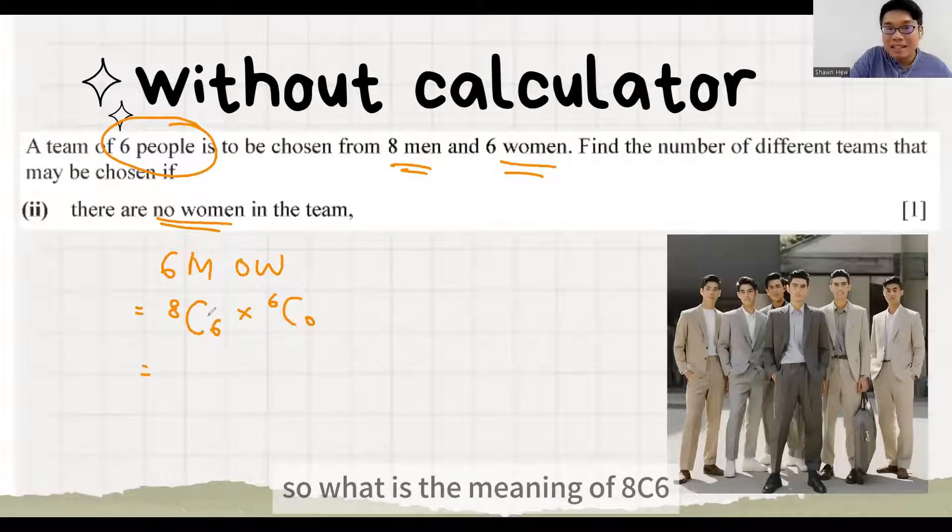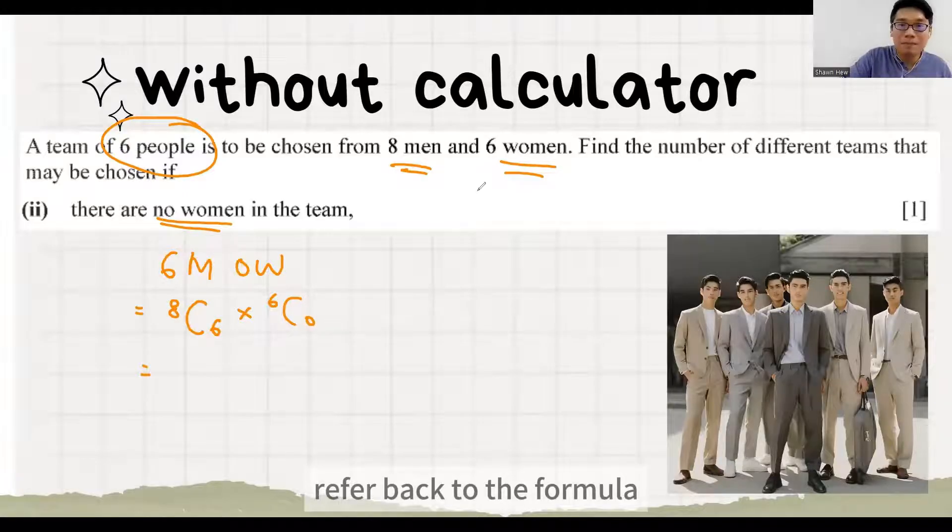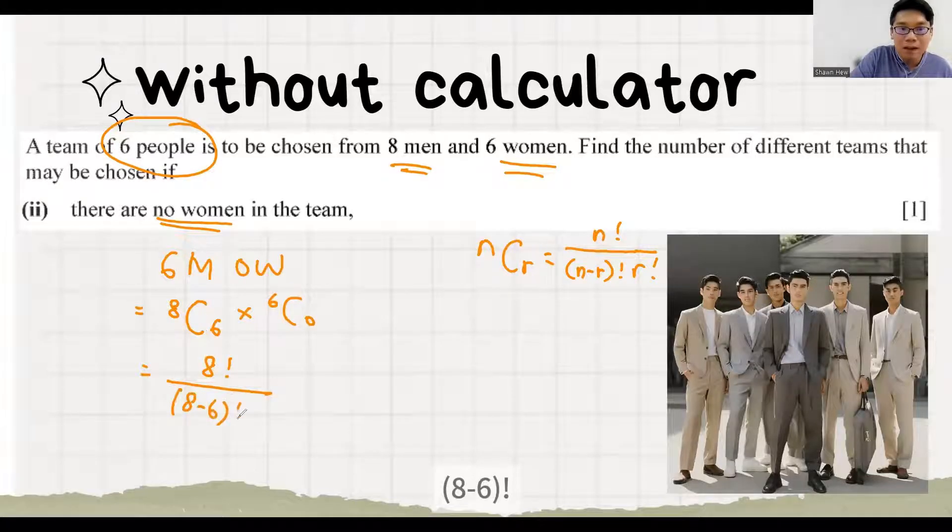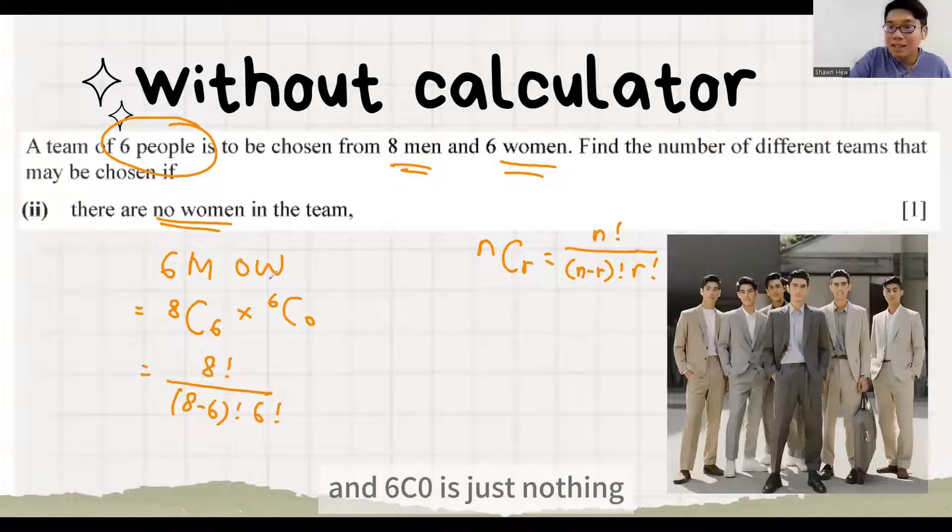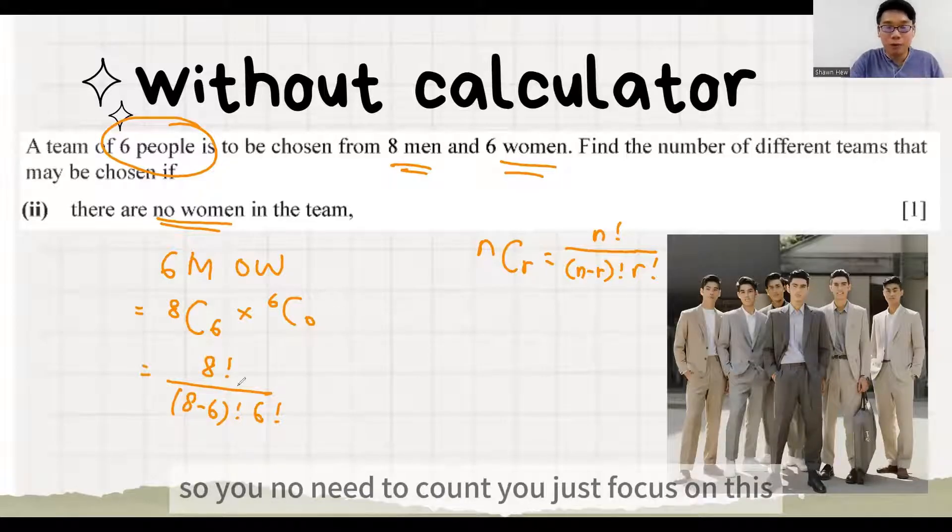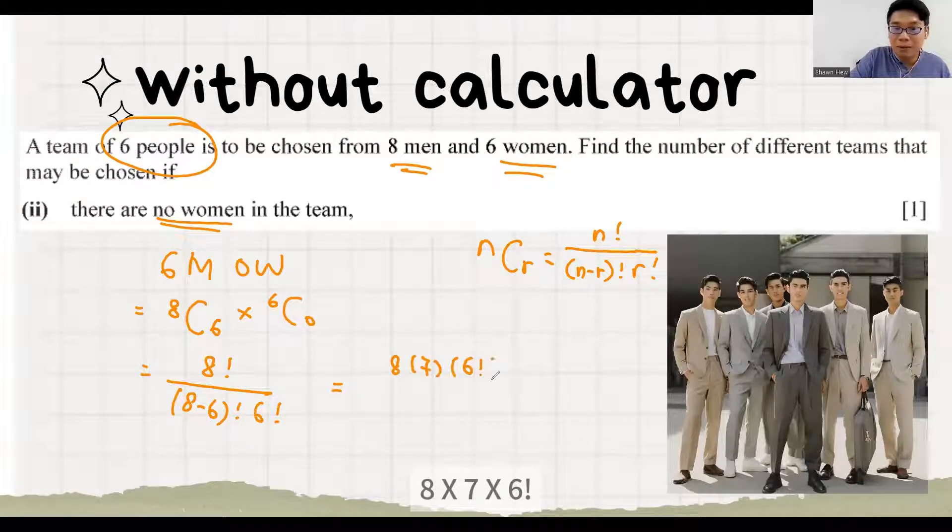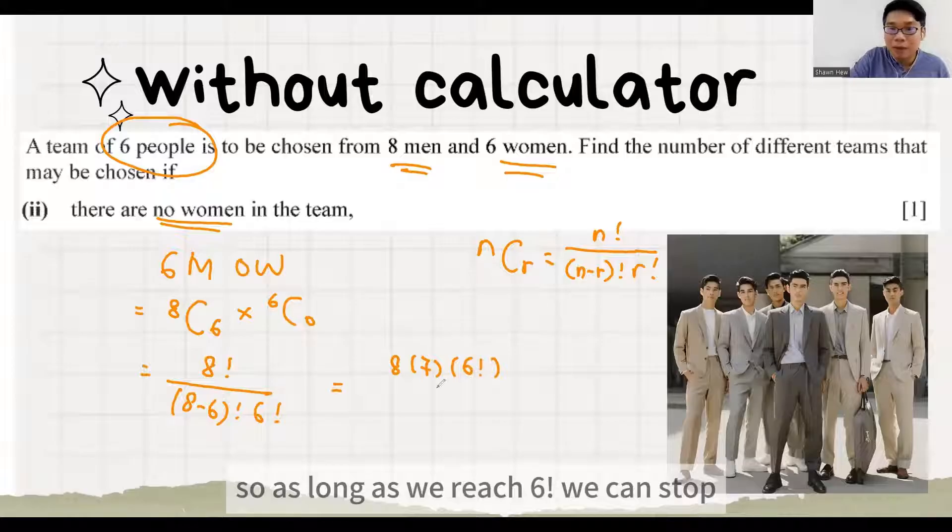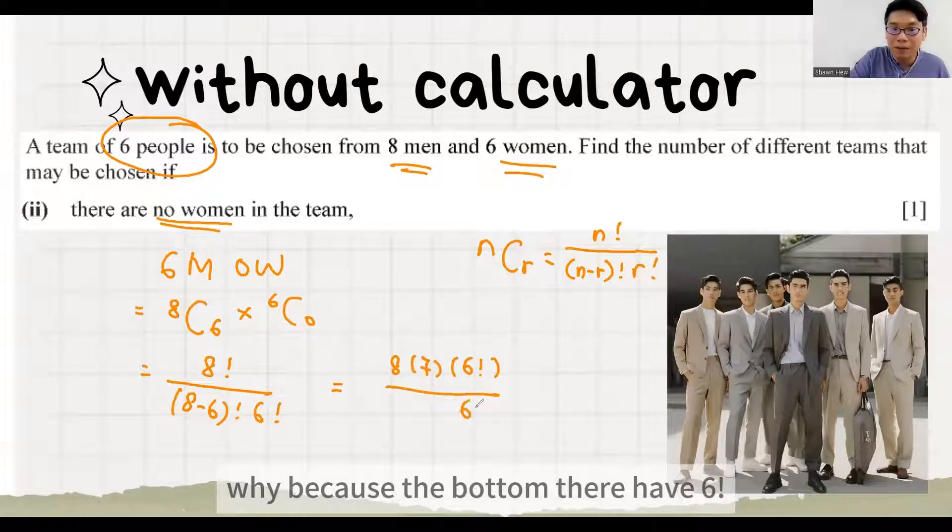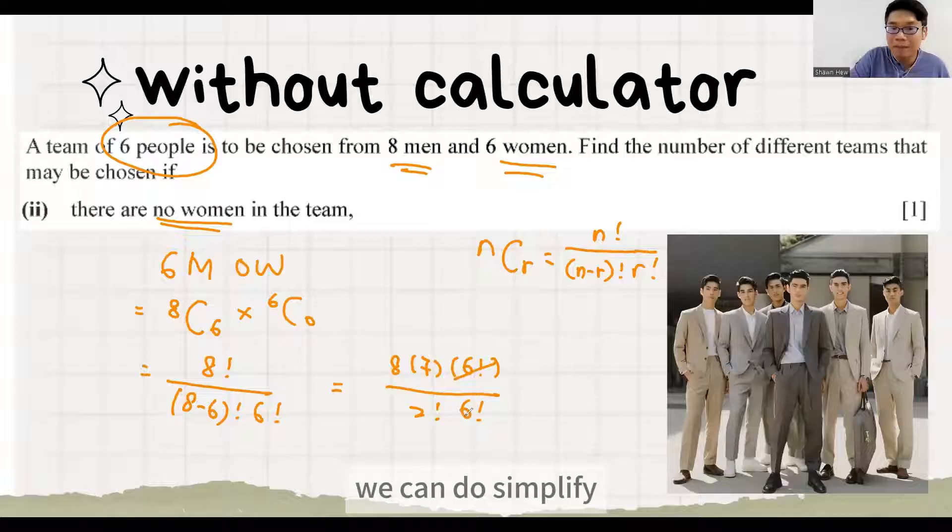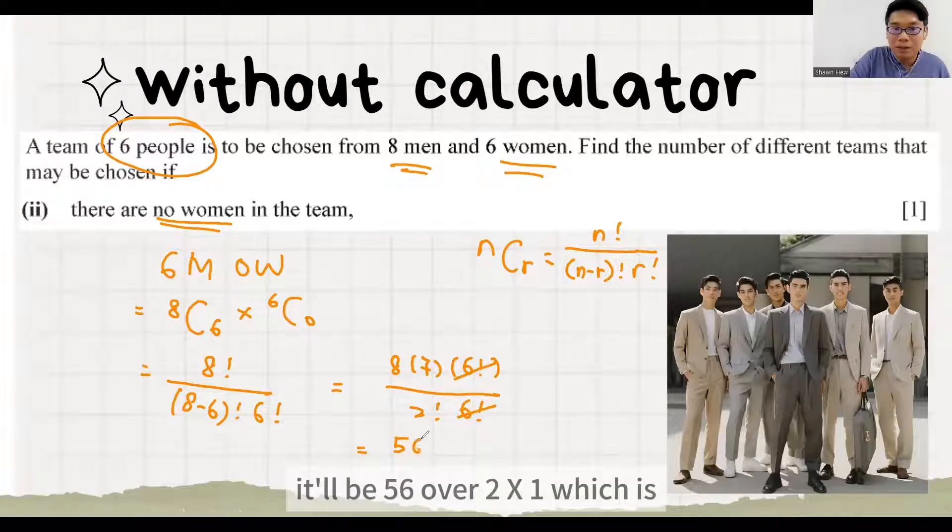So what is the meaning of 8C6? Refer back to the formula. So 8C6 is actually 8 factorial over 8 minus 6 factorial, 6 factorial. And 6C0 is just nothing. So you don't need to count. So this part we know that 8 factorial is actually 8 times 7 times 6 factorial. So as long as we reach 6 factorial, we can stop. Why? Because the bottom there have 6 factorial. Here 8 minus 6 factorial is 2 factorial. So as long as we have 6 factorial and 6 factorial, we can do cancellation. It will be 56 over 2 times 1 which is 28.